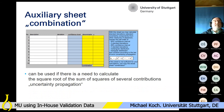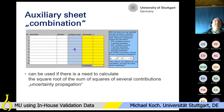Finally, there is another auxiliary sheet called 'Combination.' This can be used if you need to calculate the square root of the sum of squares of several contributions — essentially a small uncertainty budget. You can enter confidence intervals at different confidence levels: one sigma, two sigma, three sigma, 95%, 99%, rectangular, or triangular, and the sheet calculates the standard uncertainty and combines them.